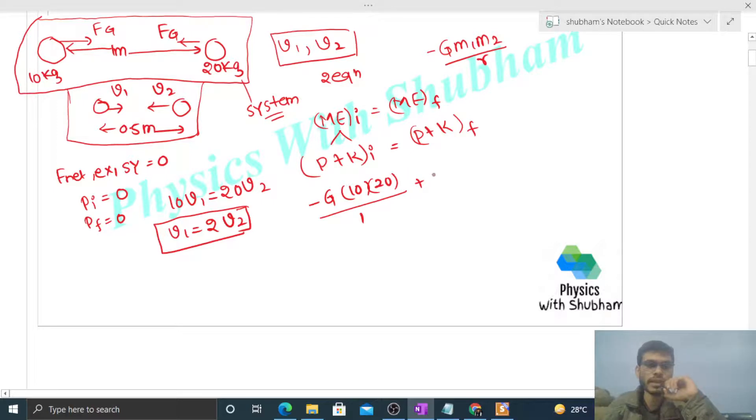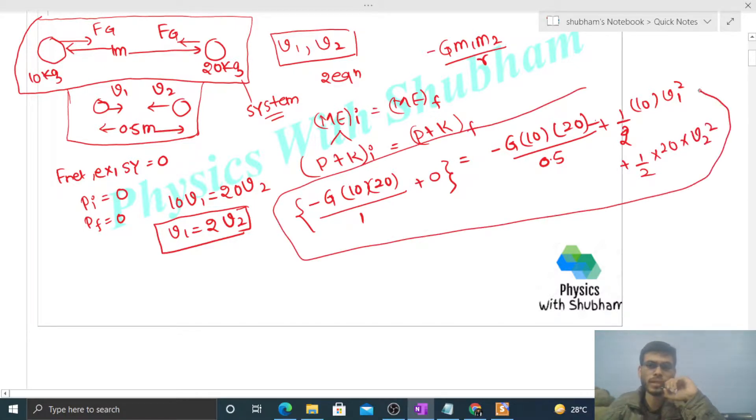That is equal to the final potential energy, that is minus capital G times m1 times m2 divided by the separation, which is equal to 0.5, plus final kinetic energy. That is half of 10 times V1 squared, and the 20 kilogram particle is moving with V2, so plus half of 20 times V2 squared.